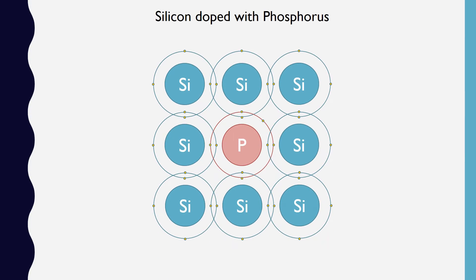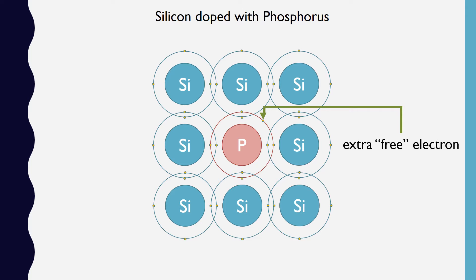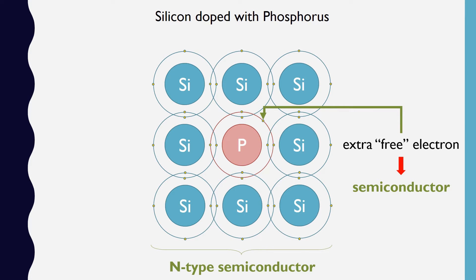Since phosphorus has one more valence electron than silicon, doping silicon with phosphorus produces an extra electron wherever phosphorus appears in the lattice. This free electron does not give the entire structure an electrical charge, but does make it a semiconductor, meaning that it can carry a charge. Let's call this phosphorus-infused lattice of silicon an n-type semiconductor, or simply n-type material, because it can carry a negative charge.